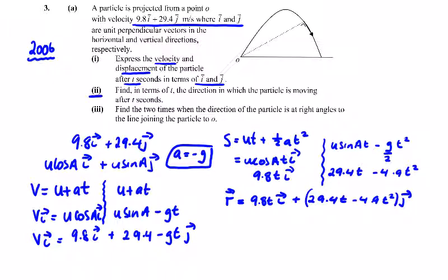Part 2: find in terms of t the direction the particle is moving after t seconds. So the tan of theta. It's going to equal the direction, so the velocity of y or j over the velocity of x. So my velocities: 29.4 minus, I should have changed that g there to 9.8, so 9.8t over 9.8.